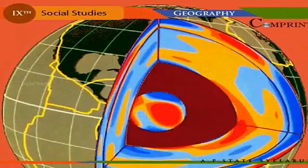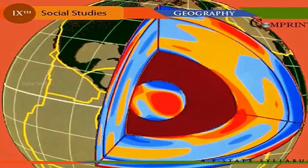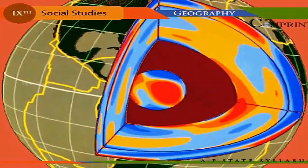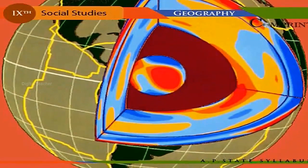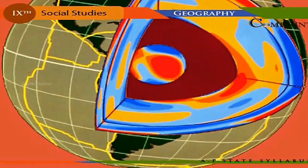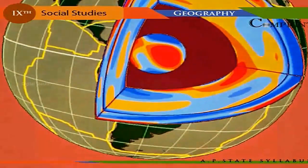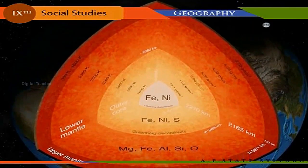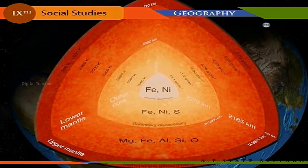The compressional waves are the first to reach the earthquake recording station. The branch of knowledge that deals with the study of earthquakes is called seismology. Seismologists refer to the compressional waves as primary or P waves, and the shear waves as secondary or S waves. The P wave can pass through any medium, whereas S waves cannot traverse liquids.